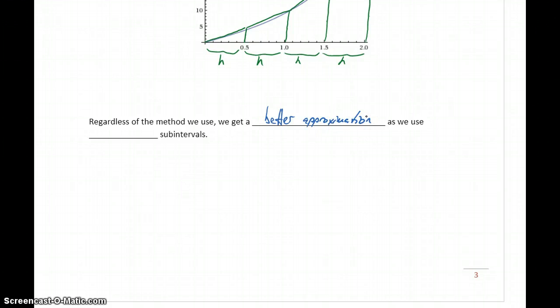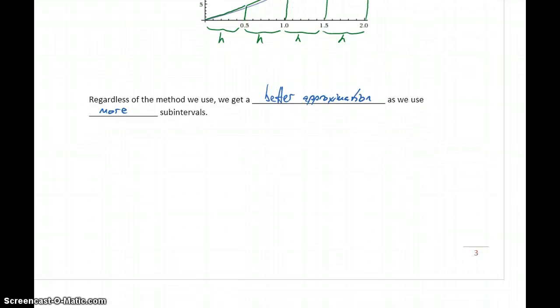We get an answer that's closer to the actual precise result as we use more subintervals. Essentially, what's happening is we look at those different subintervals.